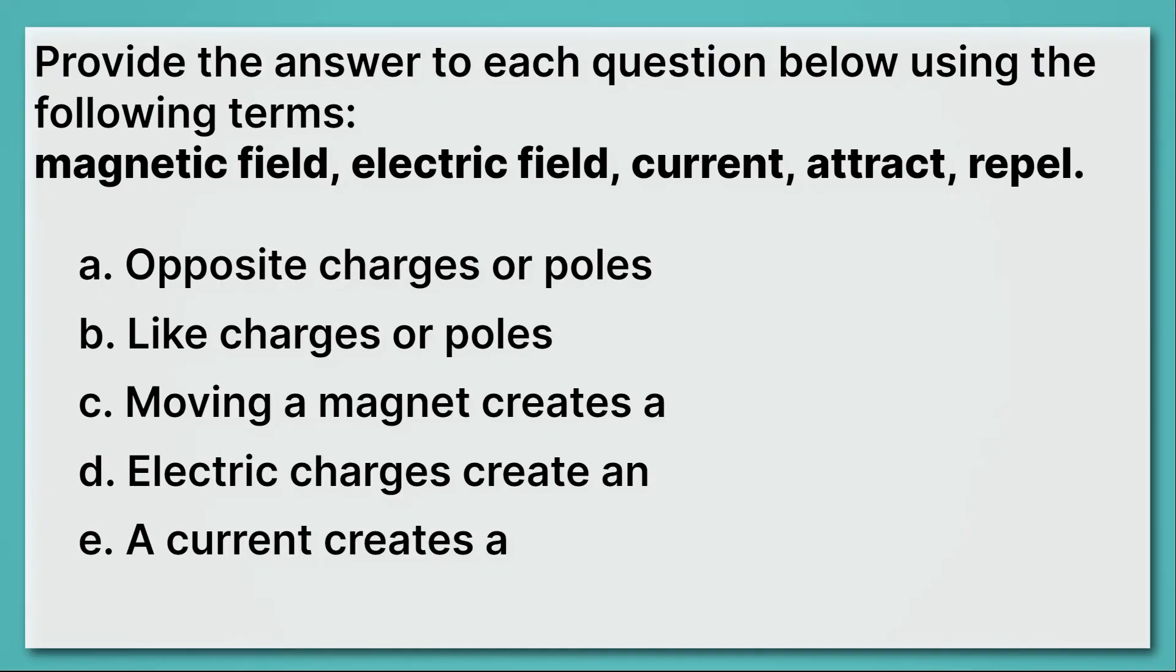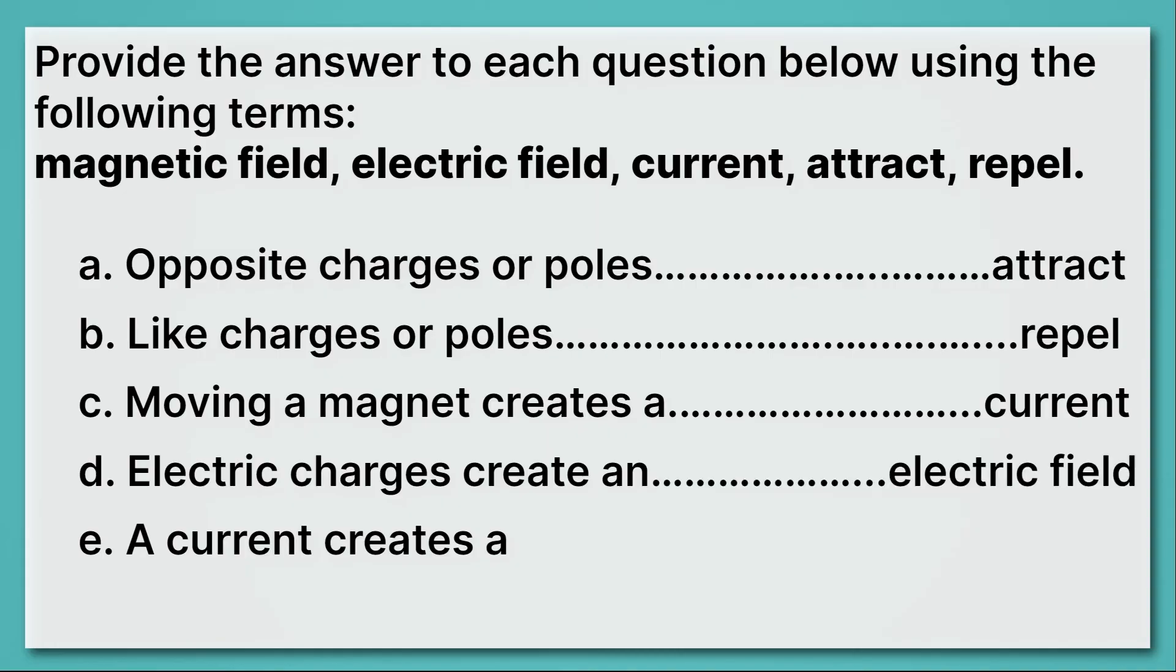Okay, let's go through them one at a time. Opposite charges or poles attract each other. Like charges or poles repel each other. Moving a magnet creates a current, and electric charges create an electric field. Lastly, a current creates a magnetic field. Okay, those are pretty tough. So if you didn't get them all, don't worry about that. Remember, this is just the introduction to our unit on electromagnetism. But by the end, you're going to be an expert in these things.